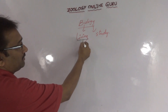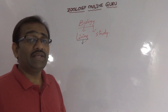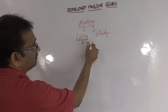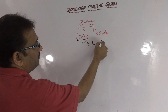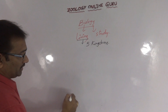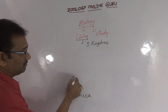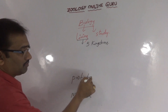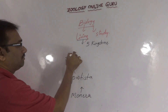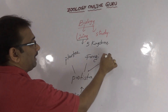Already I have given in the last video about Whittaker's classification. Whittaker classified living organisms into five kingdoms: namely, first one is Monera, then Protista, Plantae, Fungi, and Animalia.